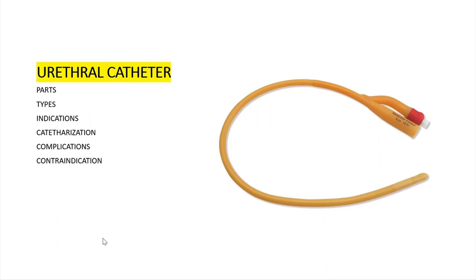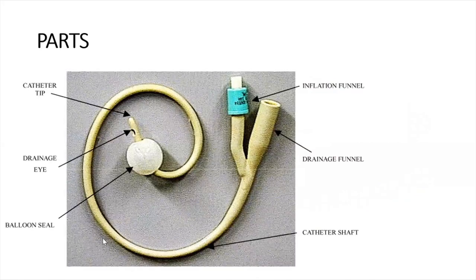This is a self-retaining urethral catheter because it has a balloon that makes it retained. We are going to talk about the various parts, the types, indications for use, procedure for catheterization, its complications and contraindications. The various parts of the urethral catheter include the funnels which meet at the Y junction. There is the drainage funnel for draining the urine and the inflation funnel for inflating the balloon.